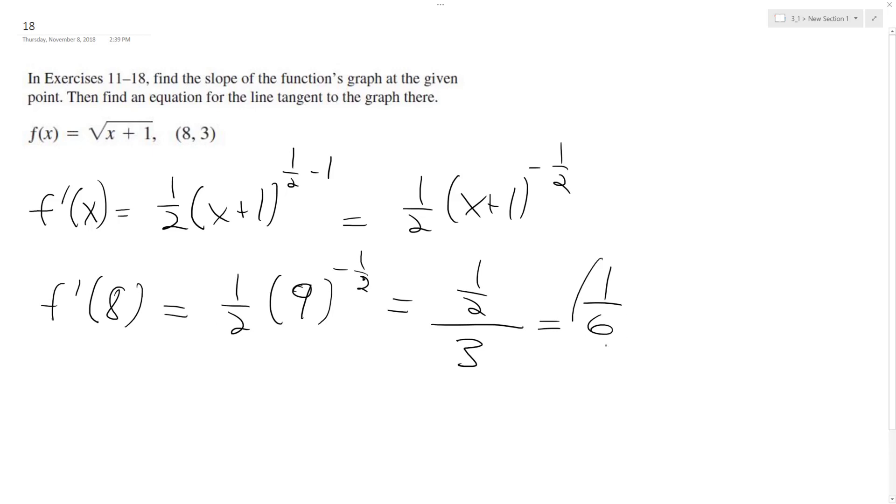Now, this is our slope for our tangent line at the point 8, so we do y minus 3 is equal to 1 sixth x minus 8. Y minus 3 is equal to 1 sixth x minus 8 over 6, which is 4 over 3.